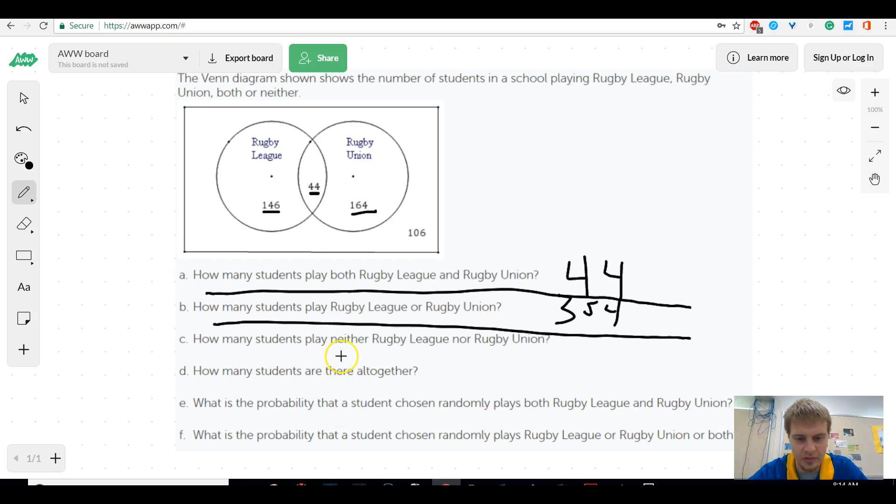How many students play neither? Well, that's easy because it's not anything in the circles. So that'd be 106. How many students play all together? Well, we would just have to take our 354 and add this 106 that we haven't added before. So that would be 460.